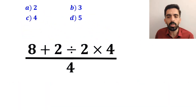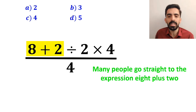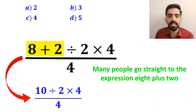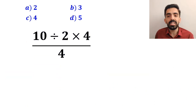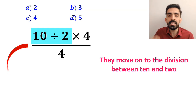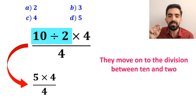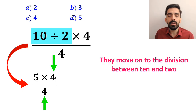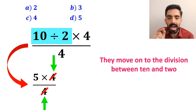In the first step, many people go straight to the expression 8 plus 2 in the numerator of this fraction, and replace the whole expression with 10 divided by 2 times 4 over 4. In the next step, they move on to the division between 10 and 2, simplifying this expression to 5 times 4 over 4. Then they say the 4s in the numerator and denominator cancel each other out, and the final answer will be 5.